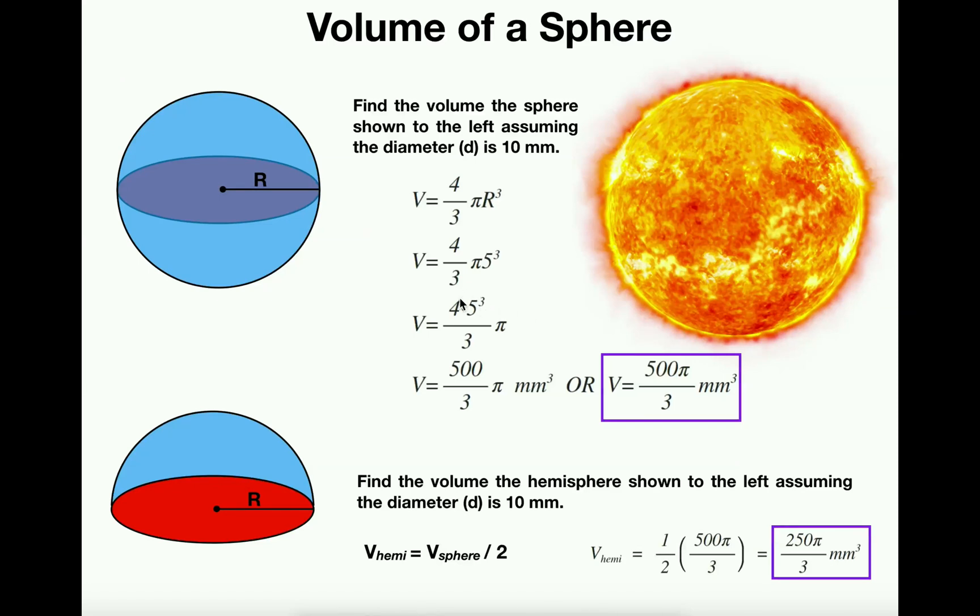And if we multiply 125 times 4, that'll actually get us 500. And so we have 500 over 3 times pi.